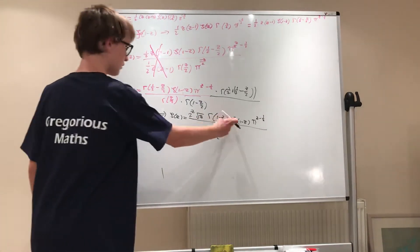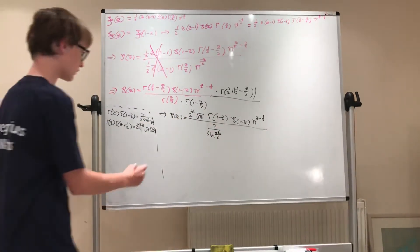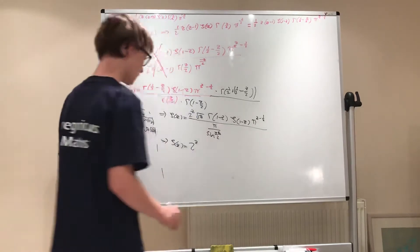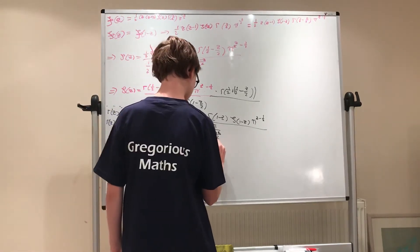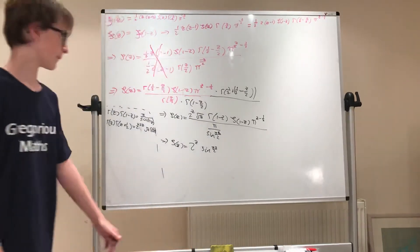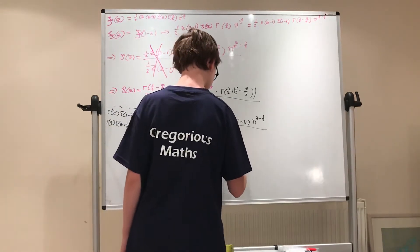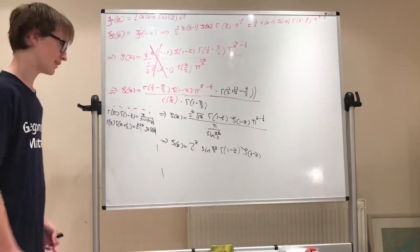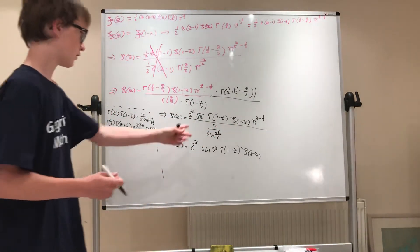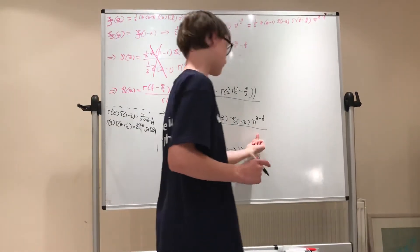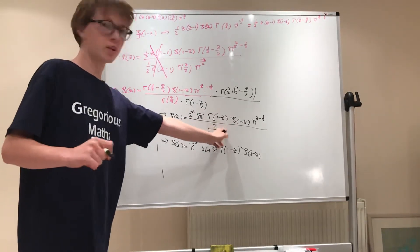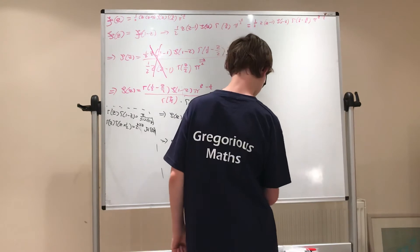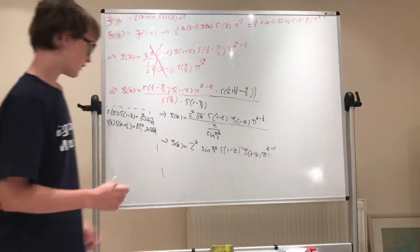Since we're dividing, this is the same as multiplying by the reciprocal. So zeta of z equals 2 to the z times sine of (pi z over 2) times gamma of (1 minus z) times zeta of (1 minus z). Then the pi's: square root of pi is pi to the one half, times pi to the (z minus one half) gives pi to the z, divided by pi gives pi to the (z minus 1). This is our final formula — very catchy and easy to remember.